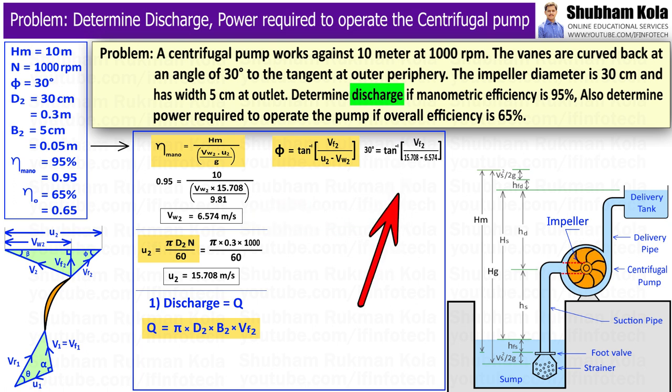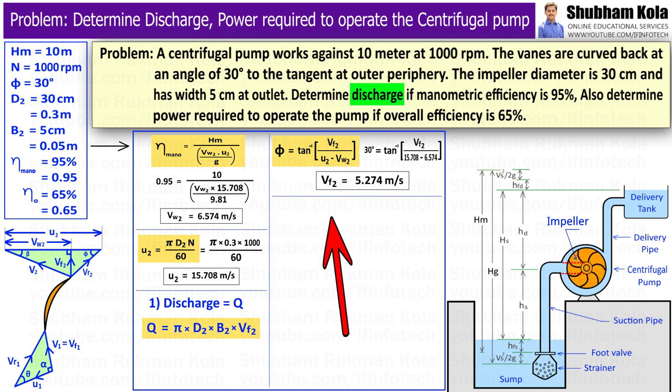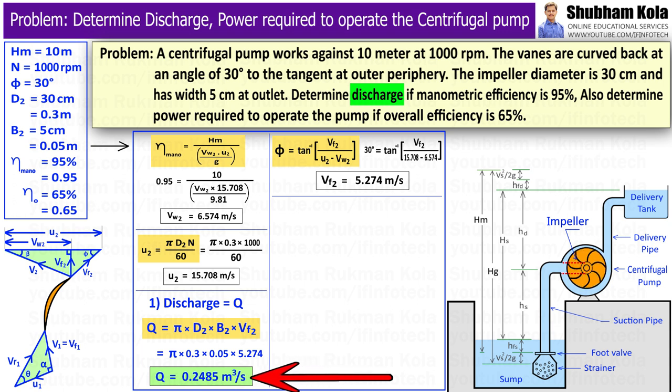I will substitute the values of Vw2 and U2 in tan phi equation, and I will calculate Vf2 as 5.274m per second. And I will put this Vf2 value in discharge formula. By calculating this, we got discharge rate Q equal to 0.2485 cubic meters per second.